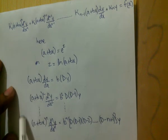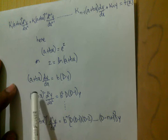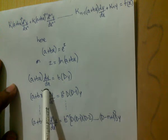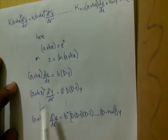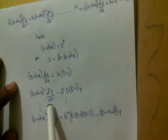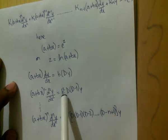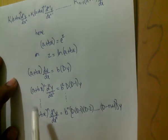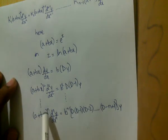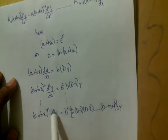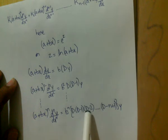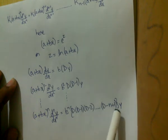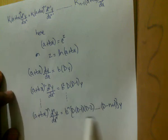By our derivation, we found that (a + bx)(dy/dx) = b·Dy, and (a + bx)²(d²y/dx²) = b²·D(D−1)y. In general, (a + bx)ⁿ(dⁿy/dxⁿ) = bⁿ·D(D−1)(D−2)···(D−n+1)y. This represents Legendre's differential equation.